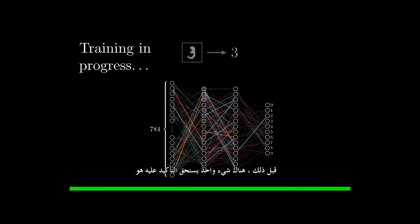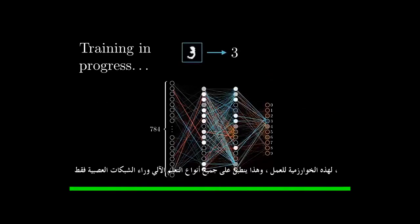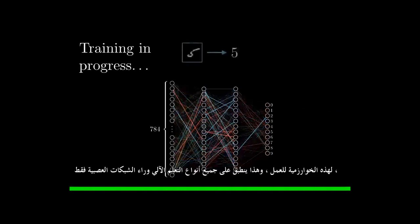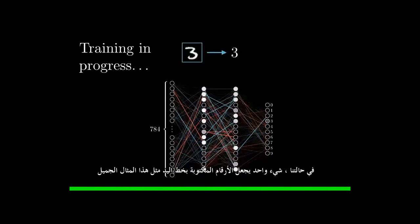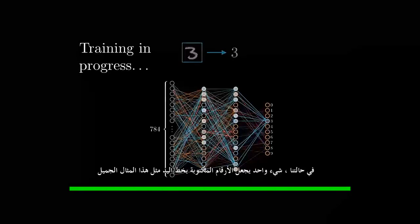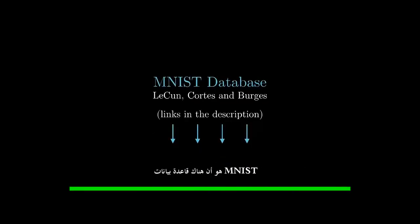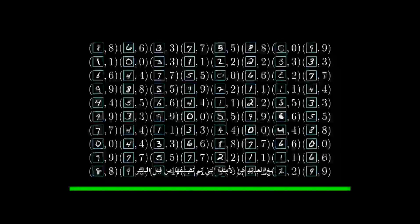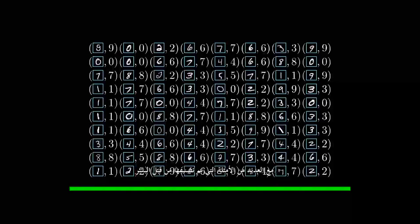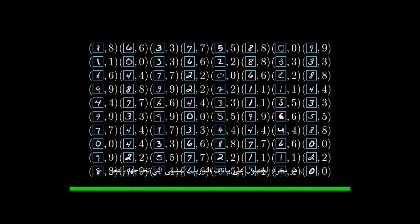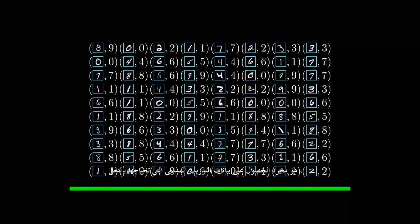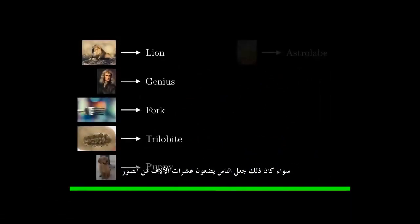Before that, one thing worth emphasizing is that for this algorithm to work, and this goes for all sorts of machine learning beyond just neural networks, you need a lot of training data. In our case, one thing that makes handwritten digits such a nice example is that there exists the MNIST database, with so many examples that have been labeled by humans. So a common challenge that those of you working in machine learning will be familiar with is just getting the labeled training data that you actually need, whether that's having people label tens of thousands of images, or whatever other data type you might be dealing with.